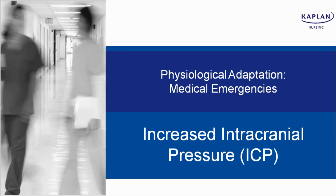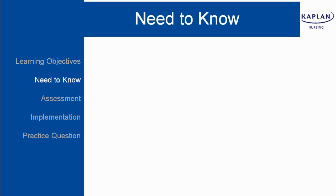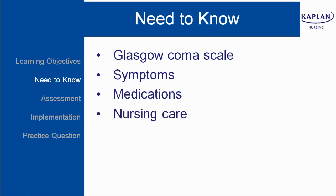I'm going to be reviewing care of the client with increased intracranial pressure. At the conclusion of this video, the nurse should be able to identify the appropriate care for a client with increased intracranial pressure. In order to provide appropriate care, the nurse would need to know the Glasgow Coma Scale, symptoms of increasing ICP, medications used to treat ICP, and nursing care of the client.